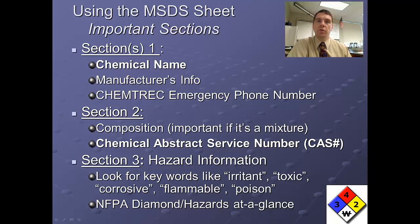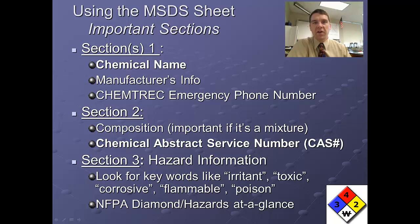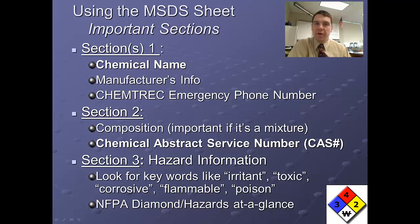The NFPA diamond uses a numerical ranking, usually 0 to 3 or 1 to 4 — the higher the number, the more hazardous. The blue diamond refers to health hazards, the red to flammability, and the yellow to reactivity. The white diamond at the bottom shows a pictogram for any special hazard. For example, a W with a line through it means not compatible with water; a hand being eaten away indicates corrosive; a dead tree and dead fish means poisonous to aquatic life.